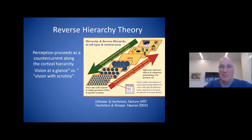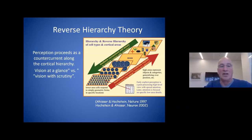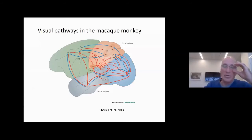You're probably familiar with the reverse hierarchy theory, put forward by Hochstein and Merav Ahissar — and Shimon said similar things — that basically perception proceeds as a counter-current along the cortical hierarchy where the first flow is related to vision at a glance, or the gist of vision, versus vision with scrutiny. This is done through the feedback pathways that are abundant in visual cortex, shown by the red arrows here.